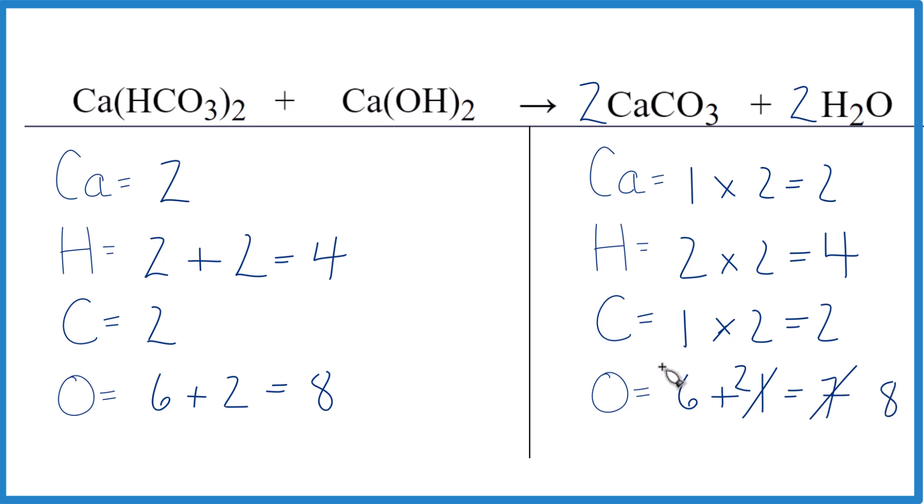And we are done. This equation is balanced. So make sure you count things up accurately and you'll be good. This is Dr. B balancing the equation Ca(HCO₃)₂ plus Ca(OH)₂, that gives us our CaCO₃ plus H₂O. Thanks for watching.